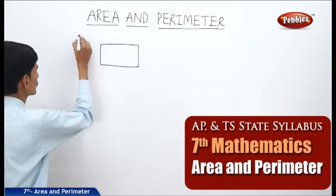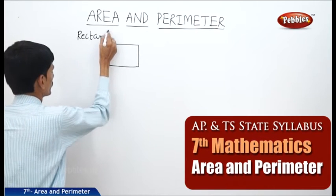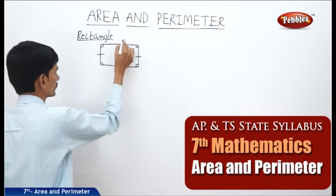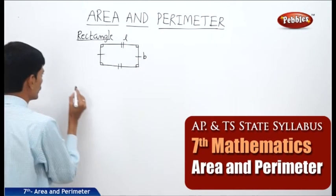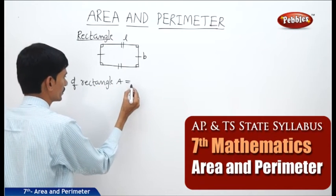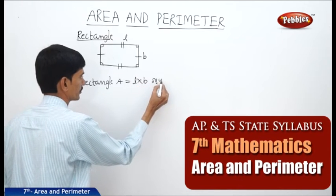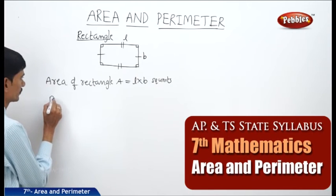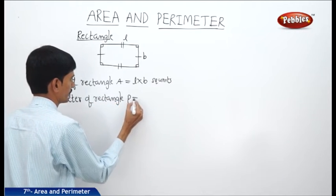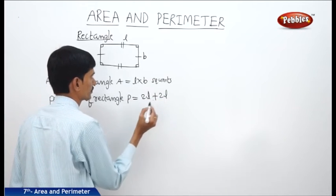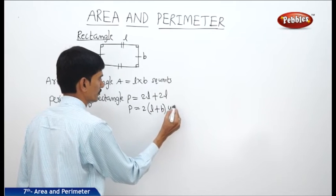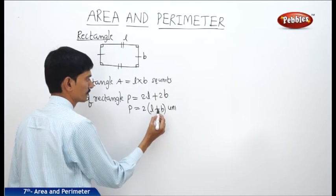First let us take the rectangle. In a rectangle, the opposite sides are of equal length. The length of the rectangle is denoted by L and breadth is denoted by B. The area of the rectangle equals the product of its length and breadth, that is L into B square units. The perimeter of rectangle equals two lengths plus two widths, which simplifies to 2 times (length plus breadth) units.